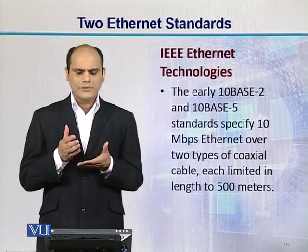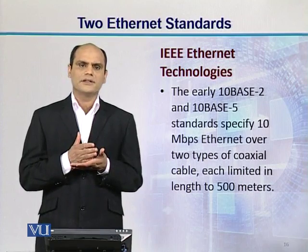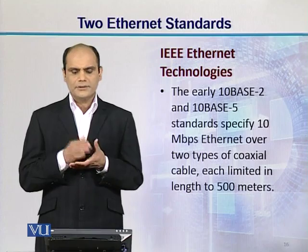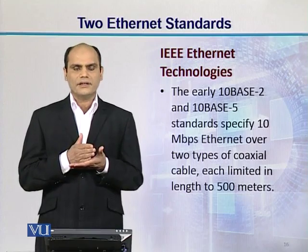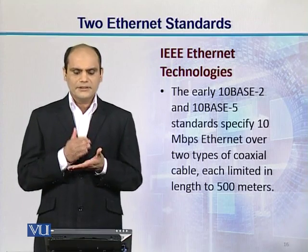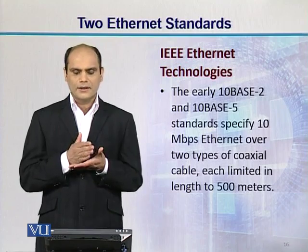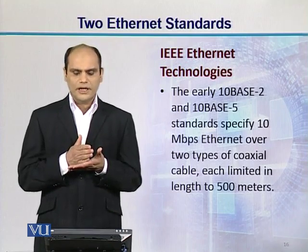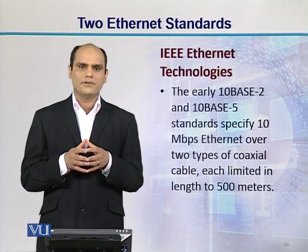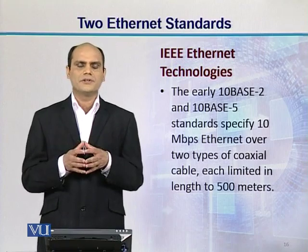Now we look at the different technologies introduced under the IEEE Ethernet standard. In the early days, the defined Ethernet standards were named 10Base2 and 10Base5. These standards specify 10 megabits per second Ethernet over two types of coaxial cable, but they were limited in length to only 500 meters. If you needed to go beyond 500 meters, repeaters were used.